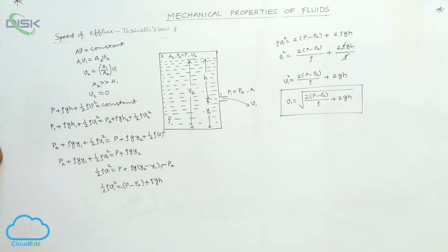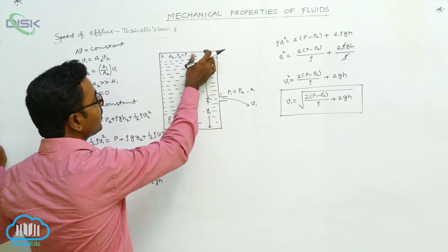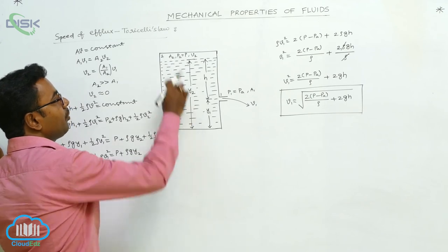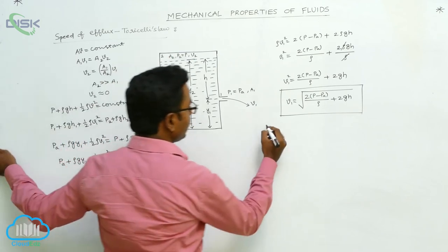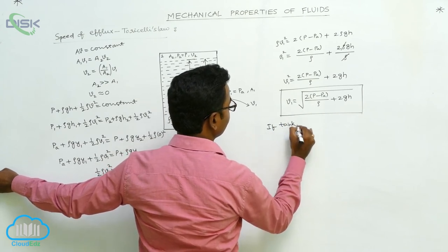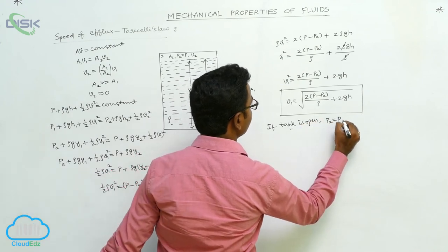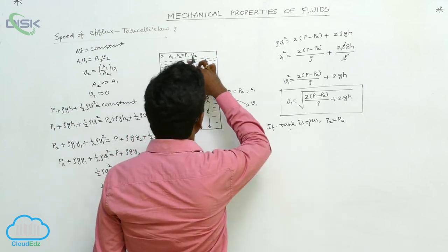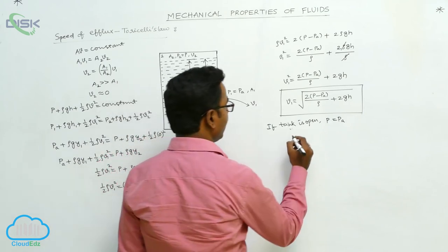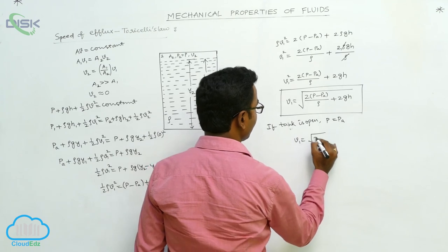Now we apply the condition that if point 2 is open to the atmosphere — meaning the tank is open — then the pressure at point 2 is also atmospheric pressure PA. We substitute P = PA into the equation; the (P − PA) term becomes 0, giving V1 = √(2gH).